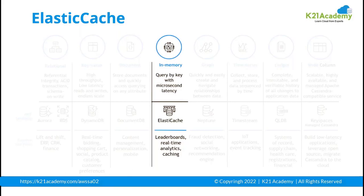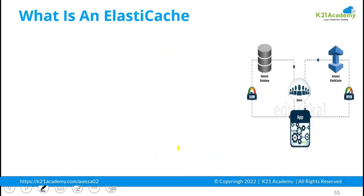The in-memory databases offered by Amazon under the name ElastiCache are used for leaderboards, real-time analytics, and caching services. ElastiCache is not only used for caching — it is also used for leaderboards and real-time analytics. These are the three main use cases of ElastiCache.